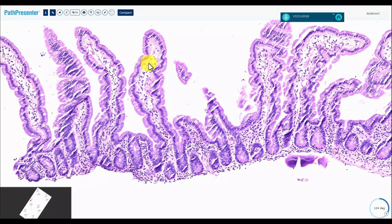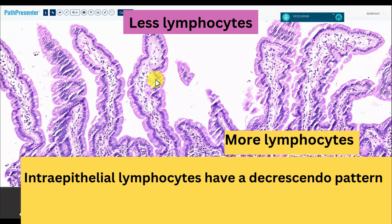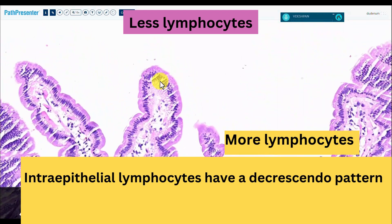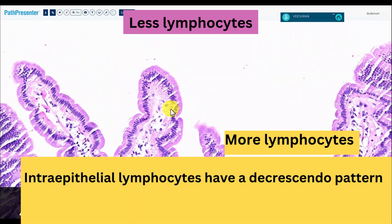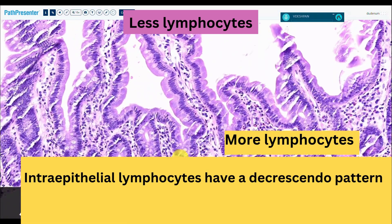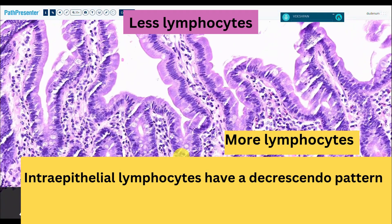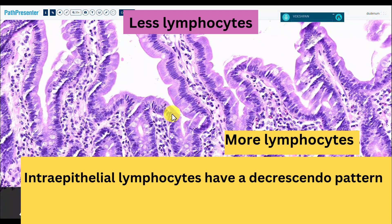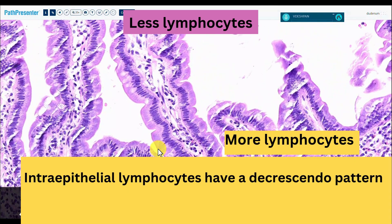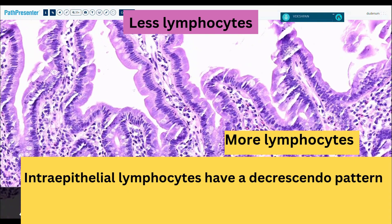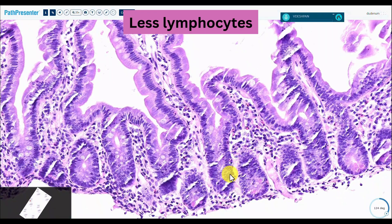One more thing about intraepithelial lymphocytes: in general, the number is fewer at the top, and there are more intraepithelial lymphocytes at the base. So there's this decrescendo pattern of lymphocytes. And here you can see there are very many more lymphocytes at this crypt base.